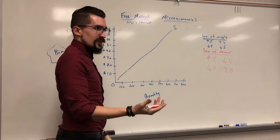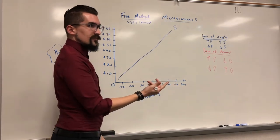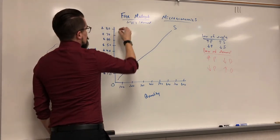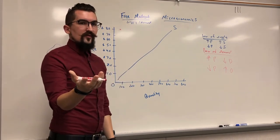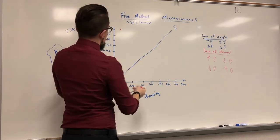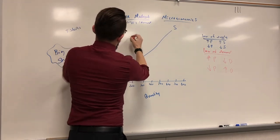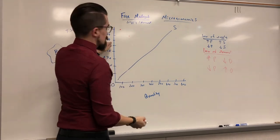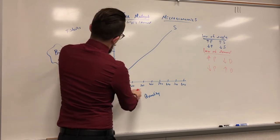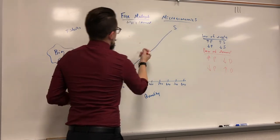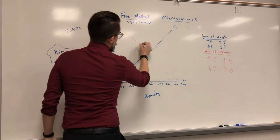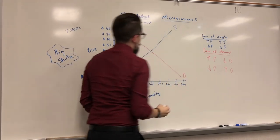If my shirt is really expensive at $80, not a lot of people are likely to buy it. Let's say at $80, only about 100 people are willing to pay that. I plot that point. At $70, I lower the price — maybe 200 people want it. At $60, about 300. If I did it for every price, you'd see the demand curve going from upper-left down to lower-right.